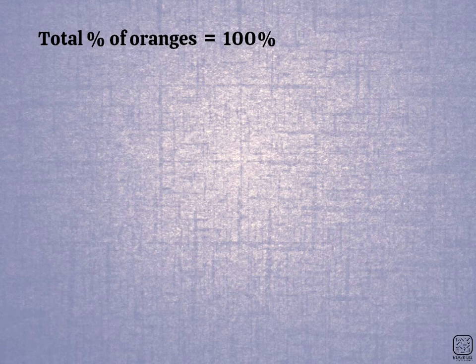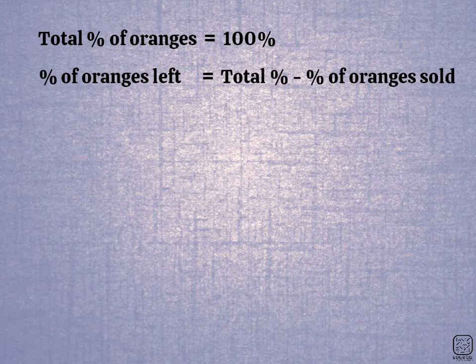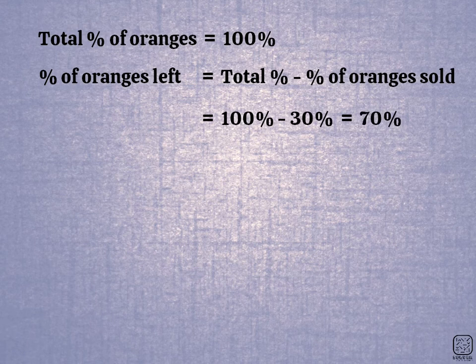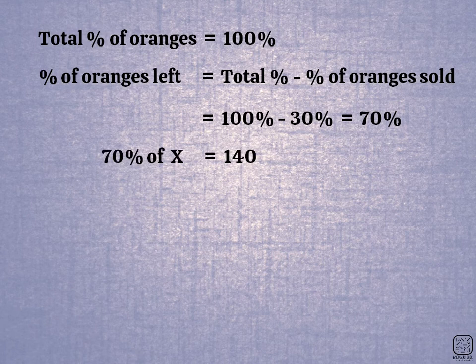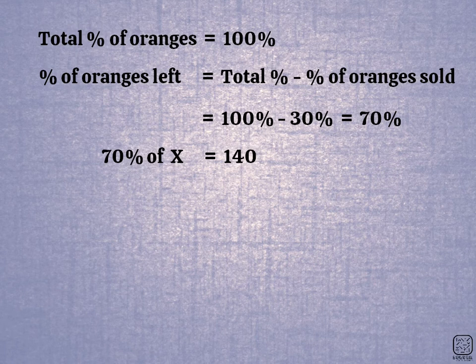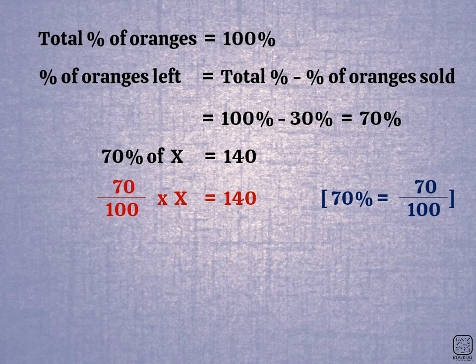What is the total percentage? The orange percentage that remains equals total percentage minus the sold percentage. Total percentage is 100%. Minus 30% gives 70%. So 100 minus 30 equals 70%. The percentage of remaining oranges is 70%. 70% of the total number of oranges is 140. Now, 70% of x is 140. If you say 70% is 70 by 100, then 70 by 100 times x equals 140.